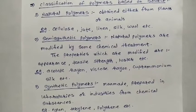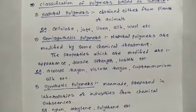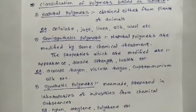The second classification based on source is semi-synthetic polymers. Semi means partially, and synthetic means artificial or manmade — so semi-synthetic means partially manmade. These are natural polymers that have been modified by some chemical treatment. The properties that get modified include appearance, tensile strength, and luster, which are improved as per necessity.